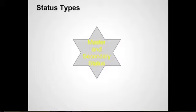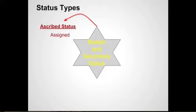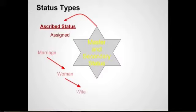Master statuses and secondary statuses can also be various types. One type is ascribed status — this is something that is assigned to us by culture. Our newly married woman is in a marriage and she's a woman, which makes her a wife. Culture will tell the wife certain roles that she might play within the marriage.